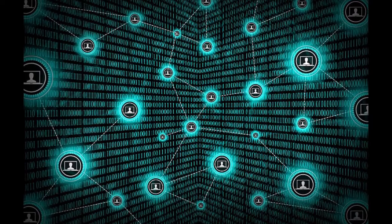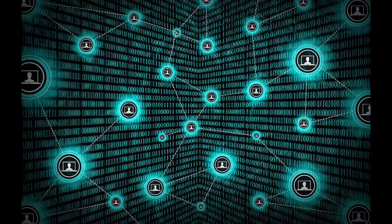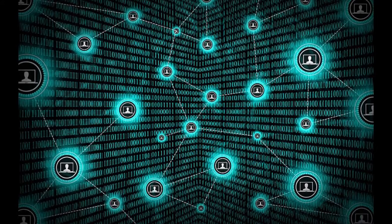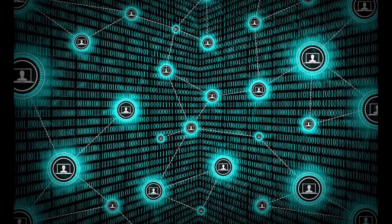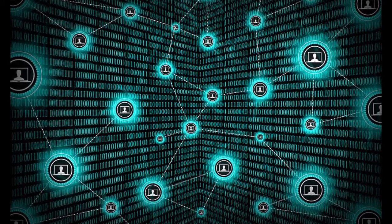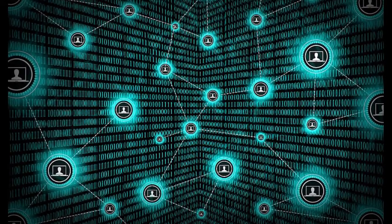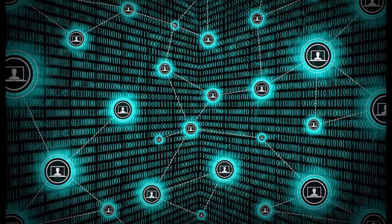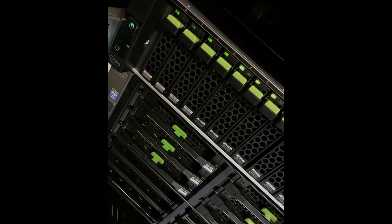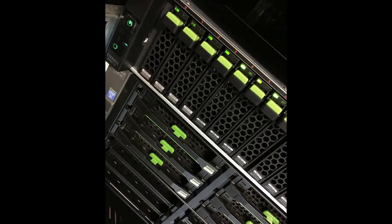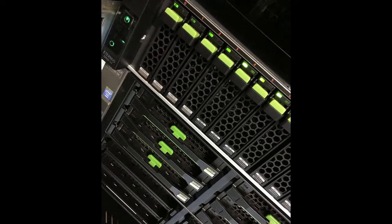In a peer-to-peer network, the peers are computer systems that are connected to each other via the internet. Files can be shared directly between systems on the network without the need for a central server. Each computer on a peer-to-peer network becomes a file server as well as a client. A peer-to-peer network is a network in which the computers are managed independently of one another and have equal rights.